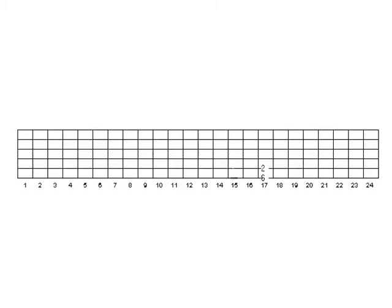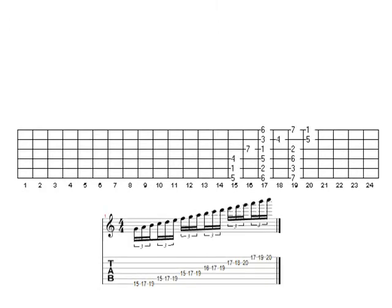Three-note-per-string pattern five starts on the fifth of the scale — in this case G, fifteenth fret. Perfect fourth, perfect fourth, perfect fourth, augmented fourth, perfect fourth, perfect fourth, perfect fourth, perfect fourth, augmented fourth, and perfect fourth. Here's the interval structure, the notes, and going from pattern four to pattern five, this is all you needed to learn.